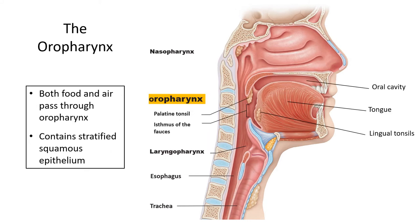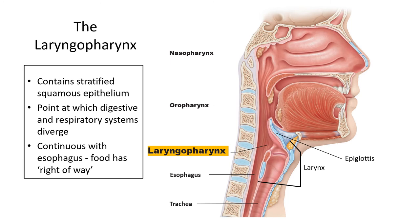Below the nasopharynx is the oropharynx, which connects the oral cavity to the rest of the pharynx. The palatine tonsils hang down at the back of the soft palate, and there are also lingual tonsils at the back of the tongue. Both air and food pass through this region — air can enter or exit through the mouth and nasal cavities, and food passes through after being formed into a bolus by the tongue. Inferior to the oropharynx is the laryngopharynx, where air and food are separated. Both the oro- and laryngopharynx are lined by stratified squamous epithelium, which can withstand the shear stresses generated by food movement.